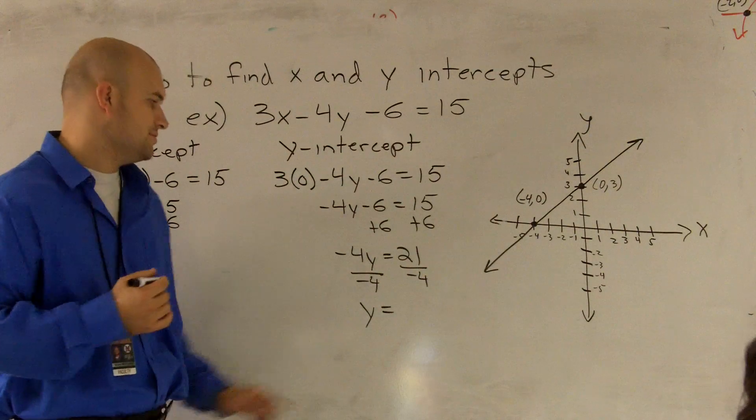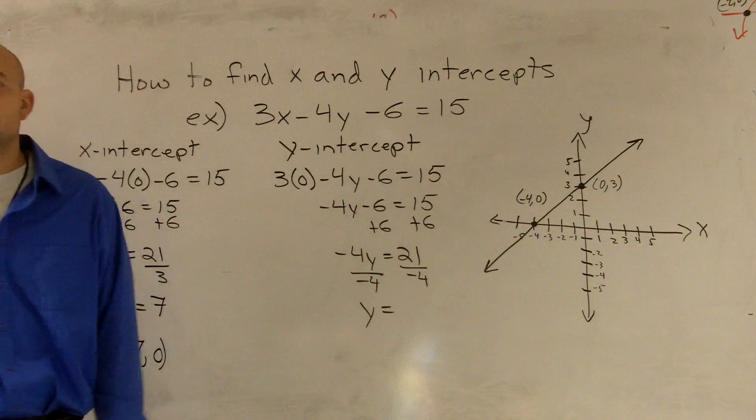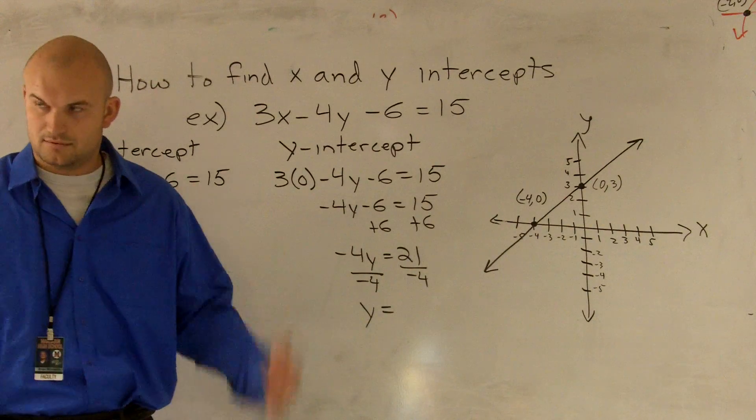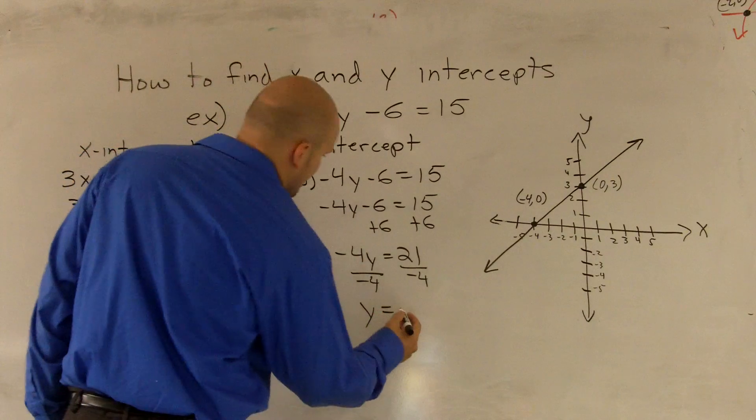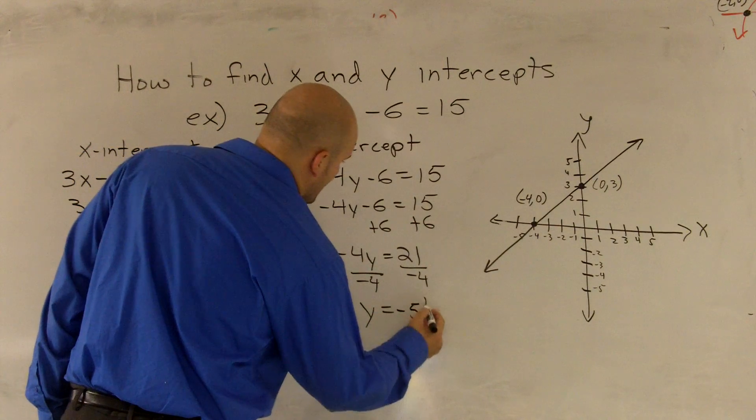Divide by negative 4. Y is going to be... 4 goes into 21 five times with a remainder of 1. So it's going to be negative 5 and 1 fourth.